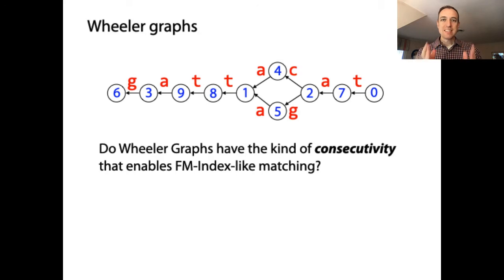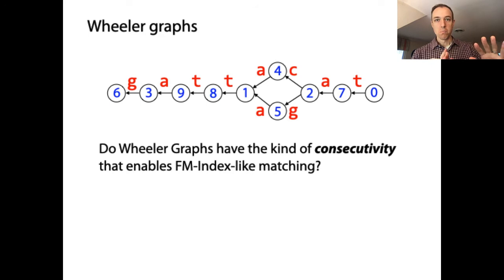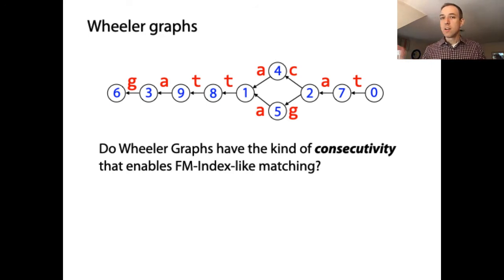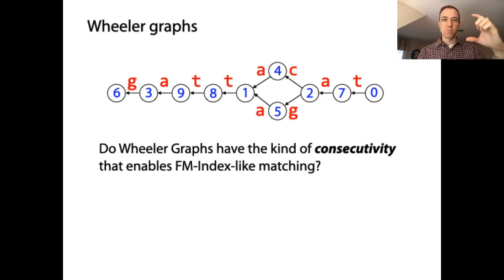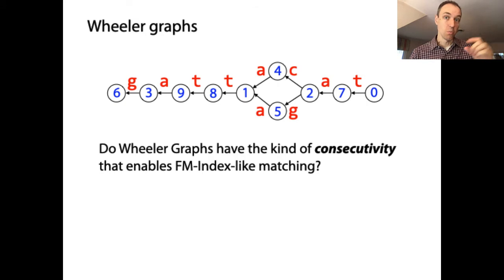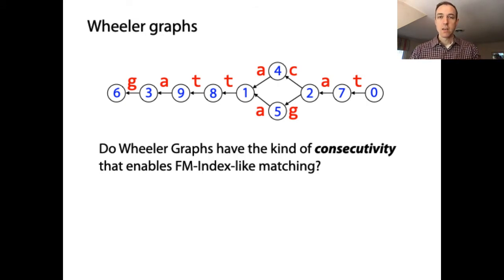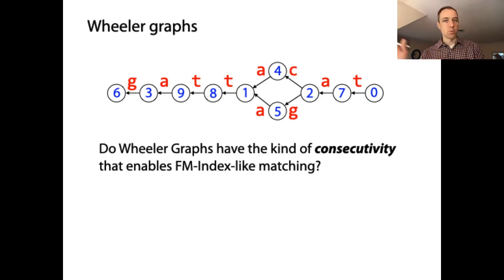It was easy to see that the consecutivity property held for the Burrows-Wheeler matrix by construction, because the rows of the Burrows-Wheeler matrix were just in sorted order. So it made perfect sense that the rows starting with a particular prefix would be consecutive. Now we have to prove something similar but for the Wheeler graph.